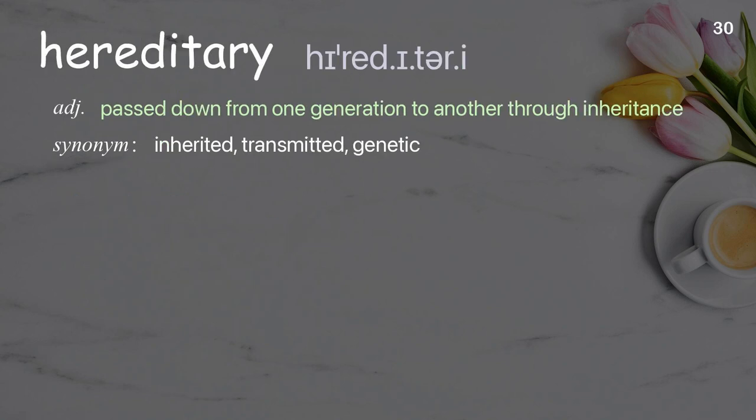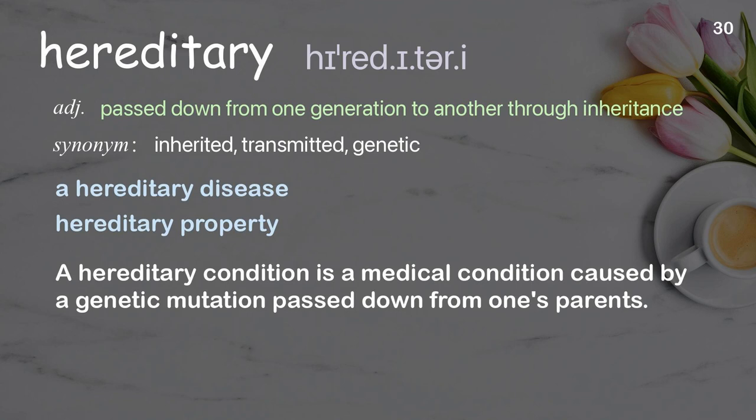Hereditary: passed down from one generation to another through inheritance. Examples: a hereditary disease, hereditary property. A hereditary condition is a medical condition caused by a genetic mutation passed down from one's parents.